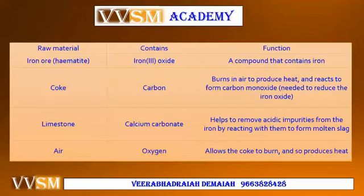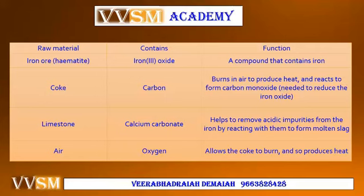Raw materials required for the metallurgy of iron: iron ore — hematite and magnetite, which contain iron(III) oxide. Coke is carbon that burns in air to produce heat and reacts to form carbon monoxide, needed to reduce the iron oxide. Limestone (calcium carbonate) helps to remove acidic impurities from the iron ore by reacting with them to form molten slag. Air provides oxygen, which allows the coke to burn and produces heat.